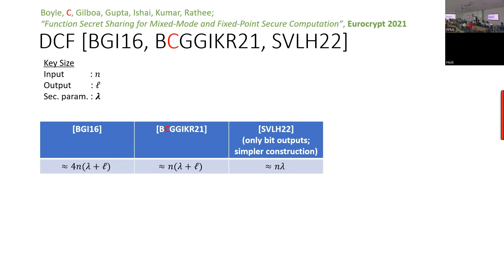If you didn't get a true secret sharing and instead got the trivial one where one party learned the output, this would be problematic when composing gates. If computing F-hat and then G-hat — the composition G of F of X — you don't want F(X) revealed. So if one party learned the output in the clear it would be a problem, because that party could potentially make unlimited evaluations of the function.